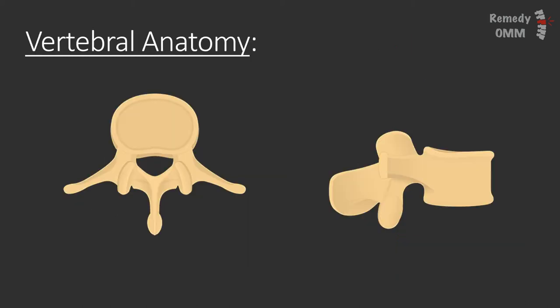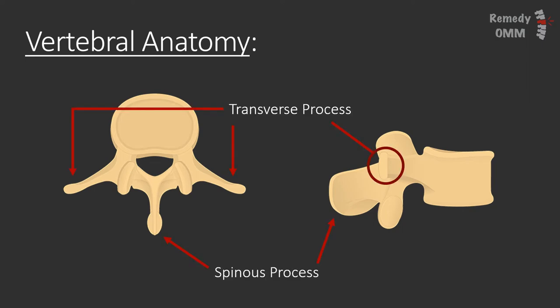The components of the spine are the vertebra, and for OMM and for the boards there are really two components you need to know: the transverse process and the spinous process. Know them and where they are in relation to the vertebral body. When examining a patient and palpating their spine, these are the two landmarks you are looking for. You will use the spinous process to know what level you are at, and the transverse process to determine any somatic dysfunctions the patient may have.